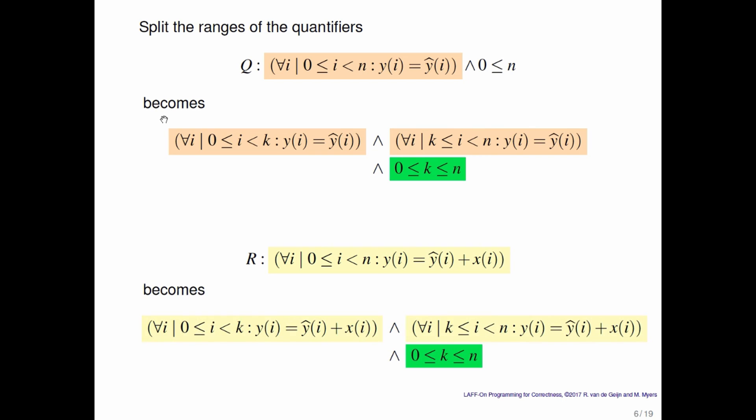Similarly, we can partition the postcondition. There the left quantifier now says that the first k entries contain the updated values, and the right quantifier says the rest of the entries also contain the updated values. And again what's in the green box just limits k so that you only address entries in the arrays that are valid entries, indexed from 0 to n minus 1.